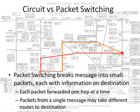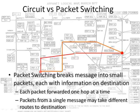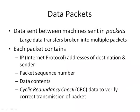Packet switching does something quite different. It breaks the overall message into small packets. Each packet has information on the destination and is forwarded from the current node to the next node, sent one hop at a time across the network. The different packets that form a single message may take different routes to the destination. If there's a network failure at one node, the packets will simply be routed through a different node and around the network in a different way.